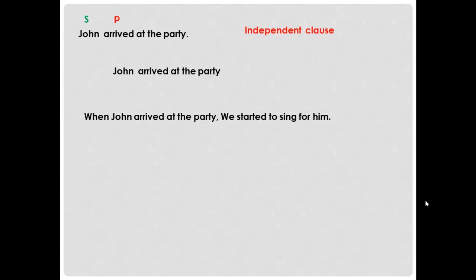So I have an independent clause. Now let's move to the second part: 'When John arrived at the party.' What happened here? I've added the subordinate conjunction 'when,' and now I don't understand the rest of the sentence. When John arrived at the party — what happened? I'm waiting for the rest of the sentence.